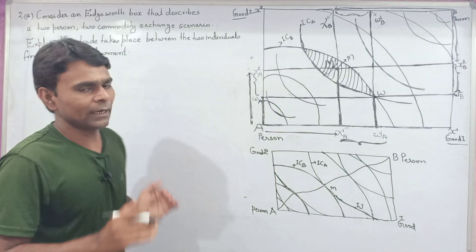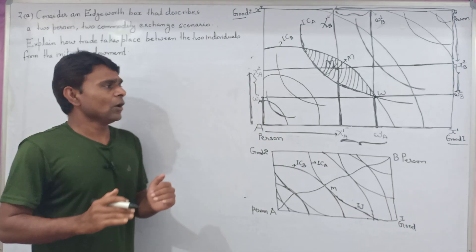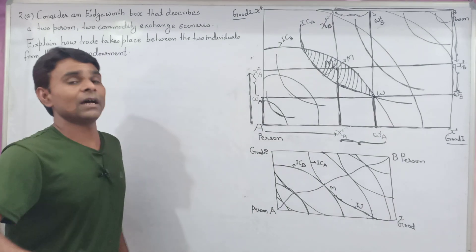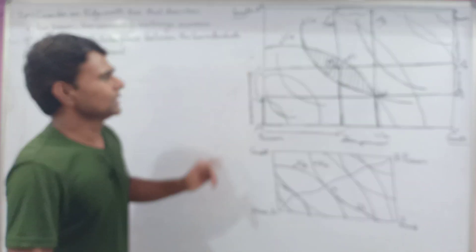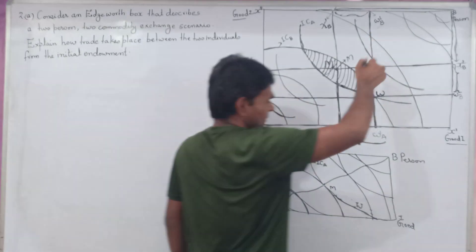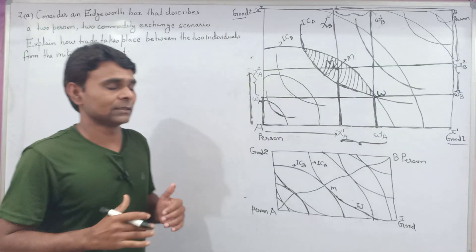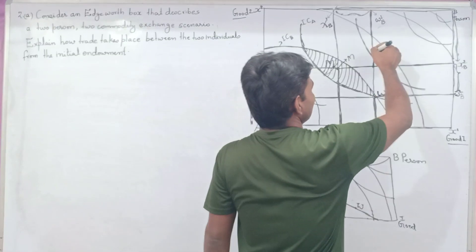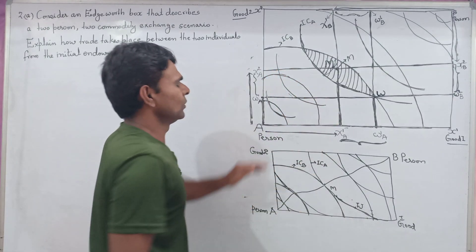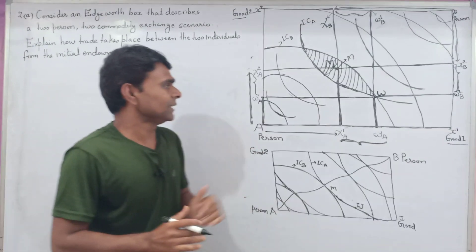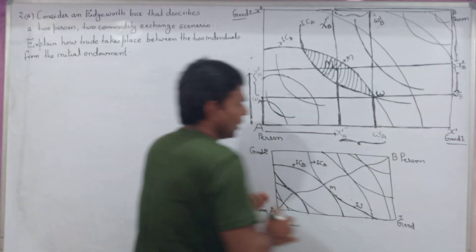Person A is better off than at her initial endowment W, consisting of a bundle of goods above the indifference curve through the initial location. Any indifference curve above the indifference curve through the initial location represents a higher level of satisfaction. Similarly, a higher indifference curve for person B represents a higher level of satisfaction for person B.